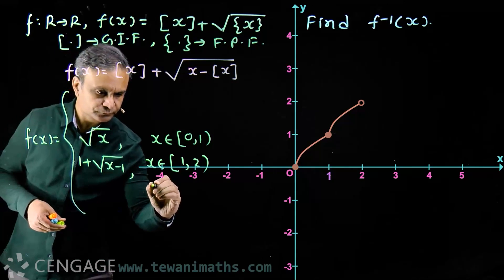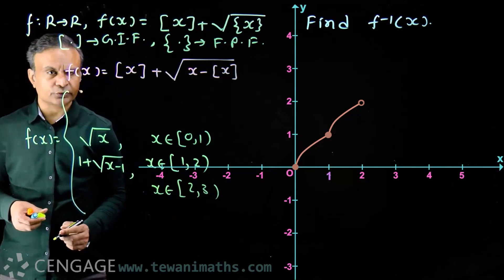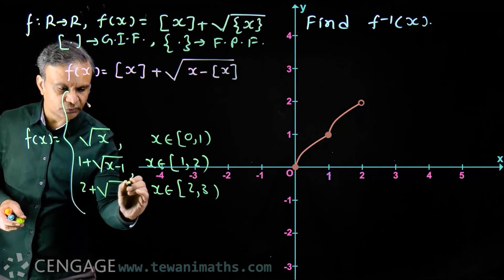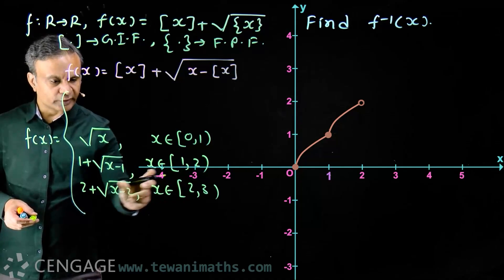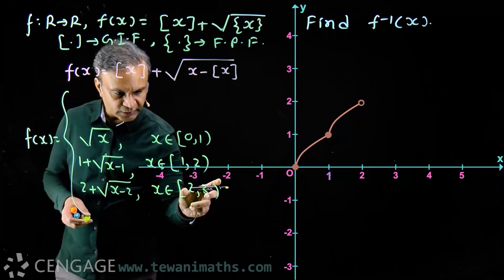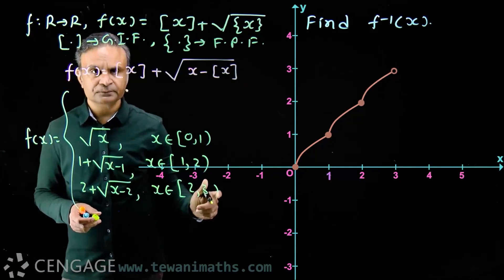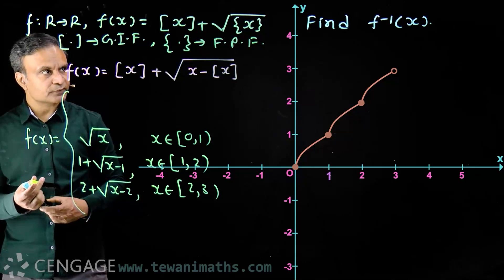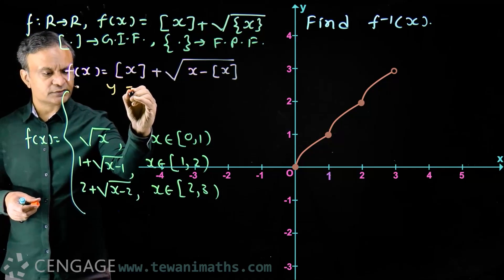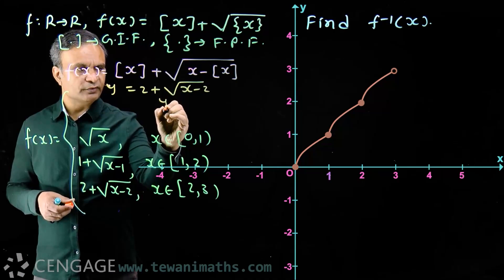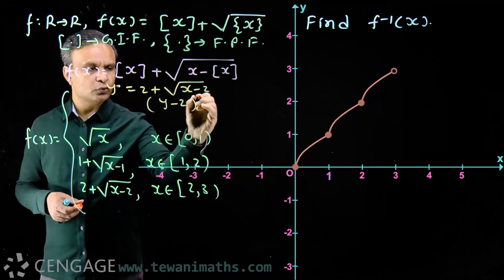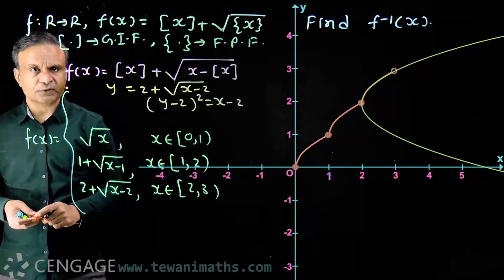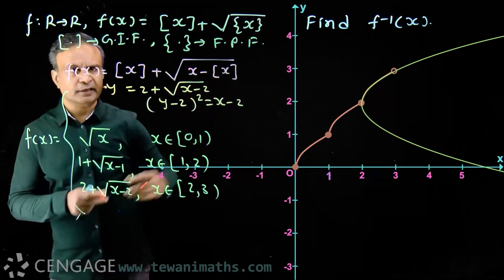For x belonging to [2, 3], the greatest integer of x is 2, so f(x) = 2 + √(x − 2). At x = 2 the value is 2, and at x = 3 the value is 3. This is also part of a parabola: setting y = 2 + √(x − 2) gives (y − 2)² = x − 2. Similarly, we get arcs of parabolas for all other intervals.